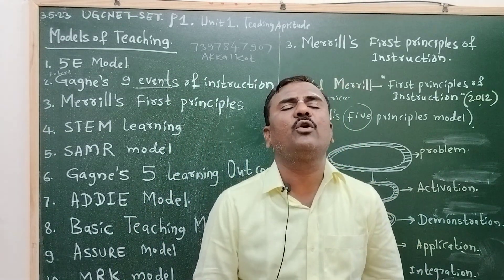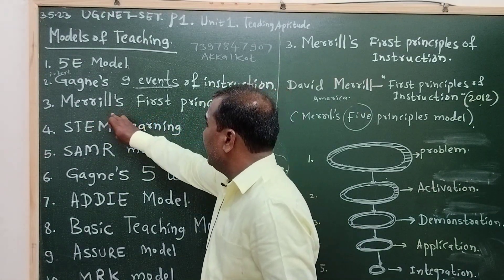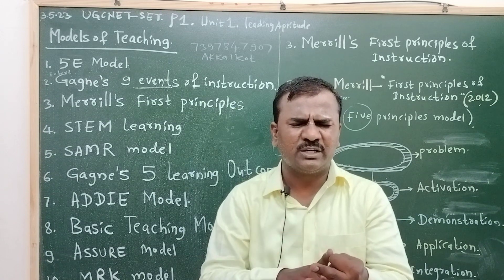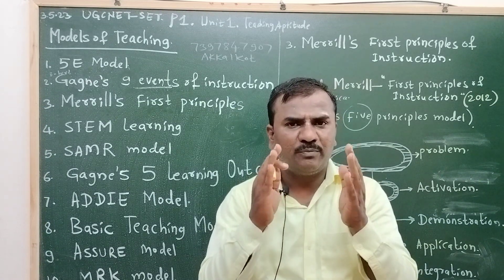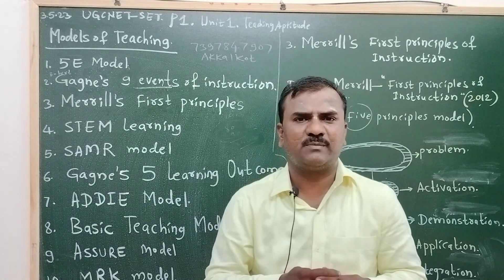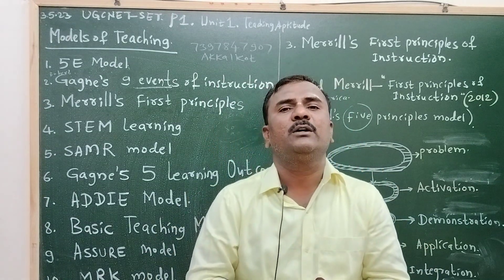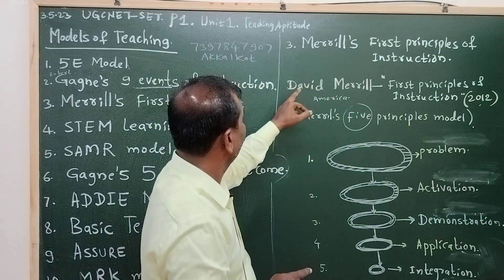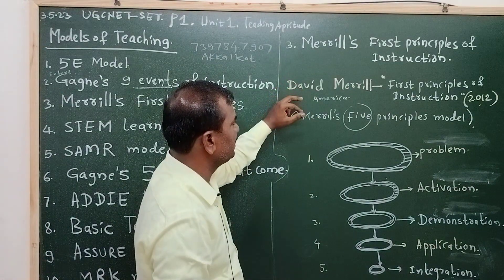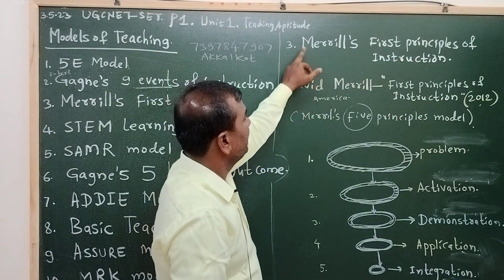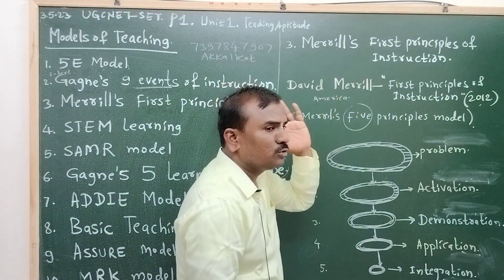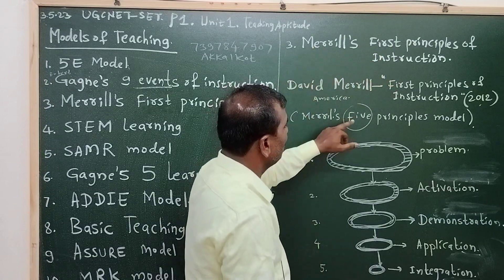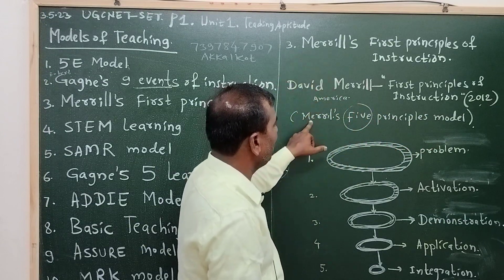It is one new model. The name of this new model is Merrill's First Principles. What is Merrill's First Principles? How many principles did he introduce? In which book did he introduce them? What are the 5 principles he introduced in his model? We are focusing on these things. David Merrill is an educational psychologist from America. He introduced one model of instruction, one model of design called the First Principles of Instruction — also known as Merrill's 5 Principles Model.